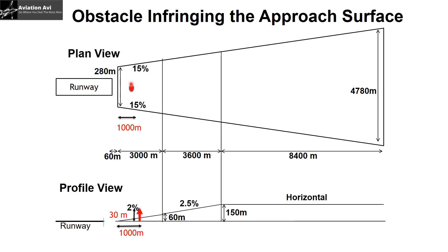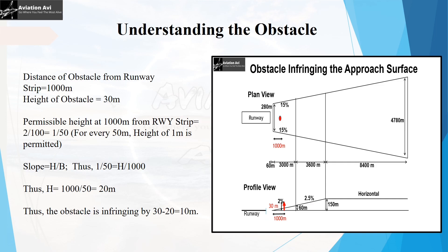Looking at the plan view, the tail of the aircraft is present at a distance of 1,000 meters from the beginning of the approach surface. From the profile view, the tail has a height of 30 meters and is also present at 1,000 meters from the beginning of the approach surface. The distance of the obstacle from the runway strip is 1,000 meters, and the height of the obstacle is 30 meters.